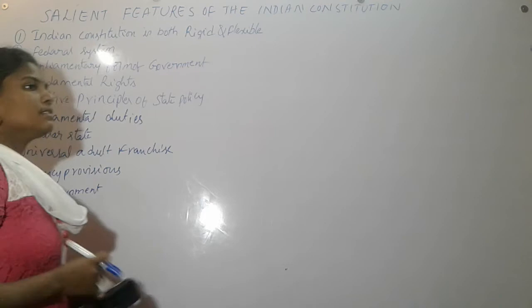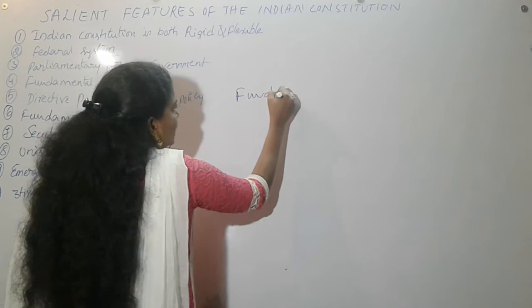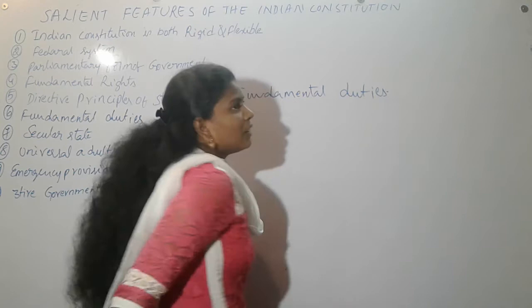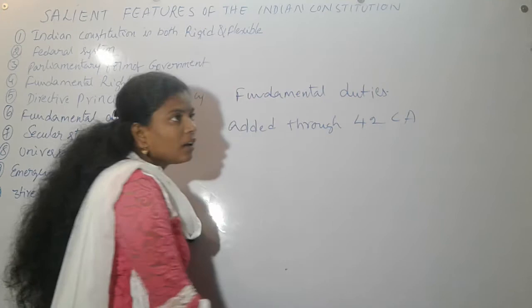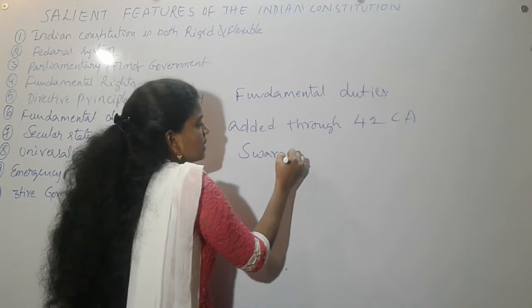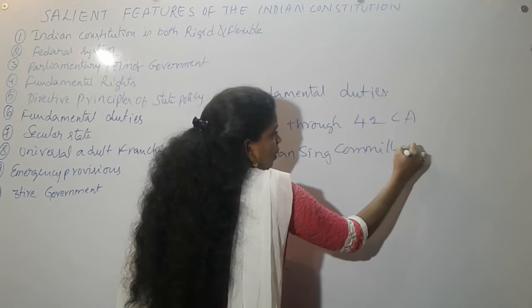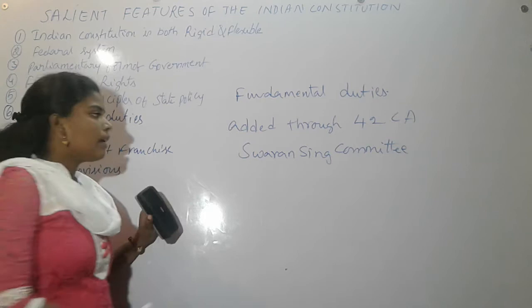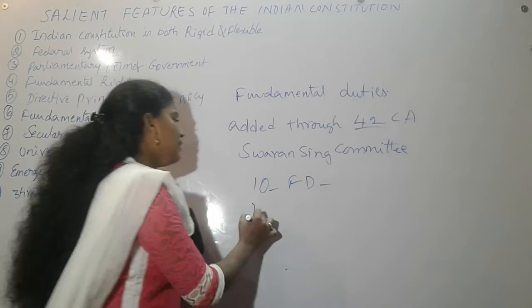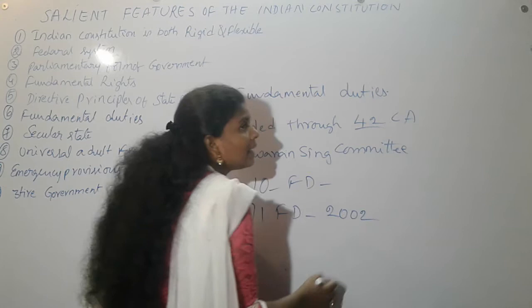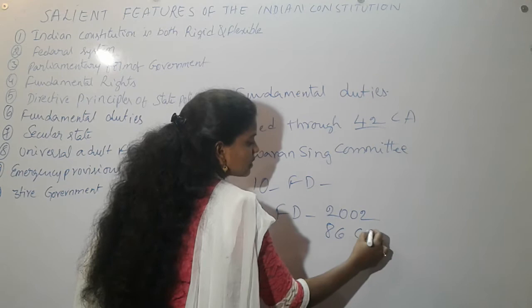Fundamental duties were added to the Constitution through the 42nd Constitutional Amendment, on the recommendations of the Swaran Singh Committee. At that time, 10 fundamental duties were added. The 11th fundamental duty was added in the year 2002 by the 86th Constitutional Amendment Act.